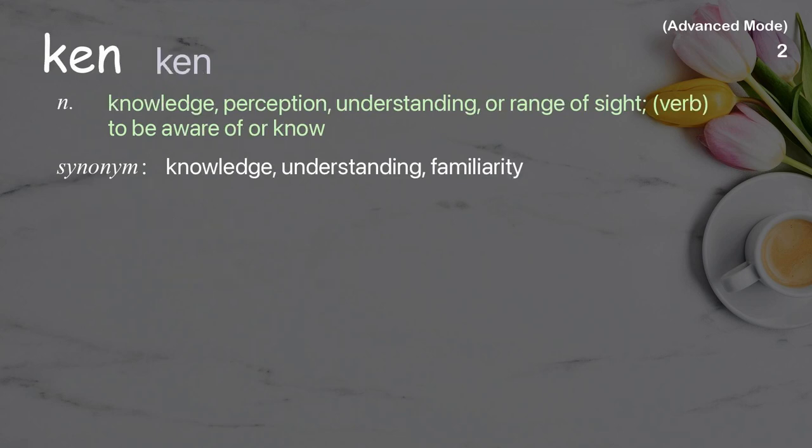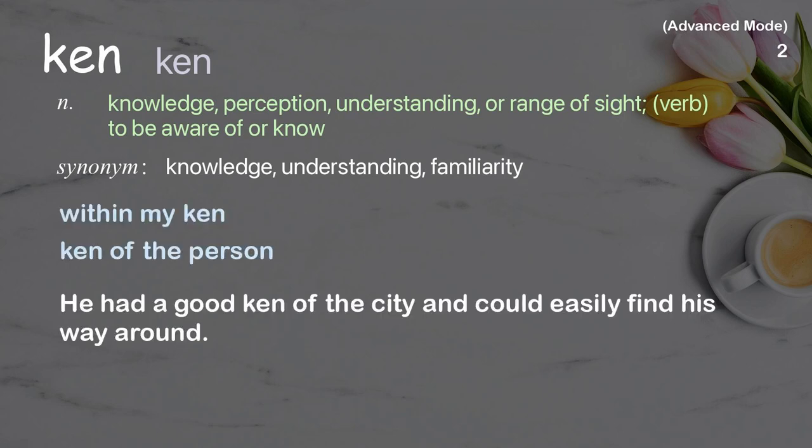Ken: Knowledge, perception, understanding, or range of sight. Verb: to be aware of or know. Examples: Within my ken. Ken of the person. He had a good ken of the city and could easily find his way around.